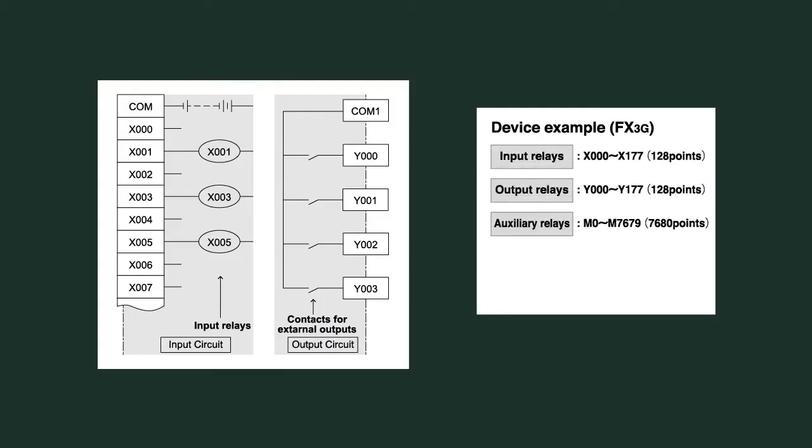Each terminal is allocated a device number like X0 or Y0. All internal devices are also allocated device numbers. For example, M0 is an auxiliary relay in the PLC, T0 is a timer, and C0 is a counter.